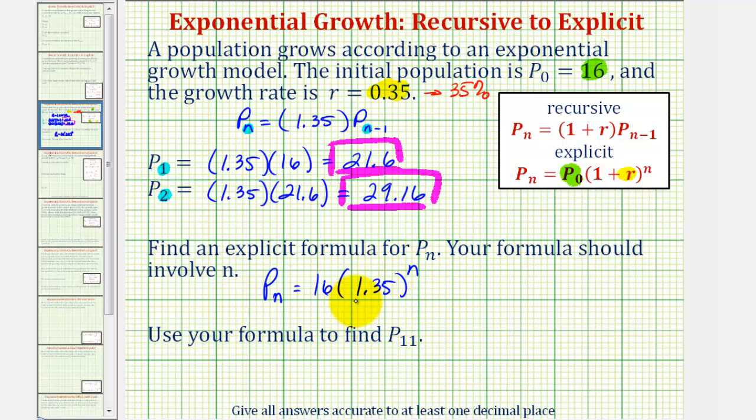Now we can use our explicit formula to find p sub 11 without knowing p sub 10. P sub 11 equals 16 times 1.35 raised to the power of 11.